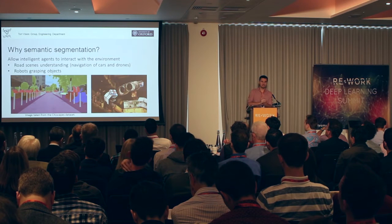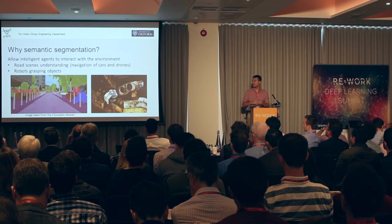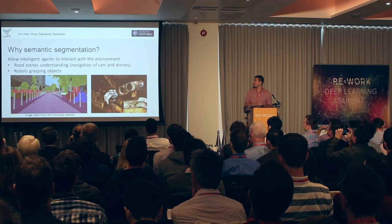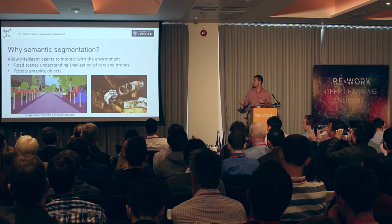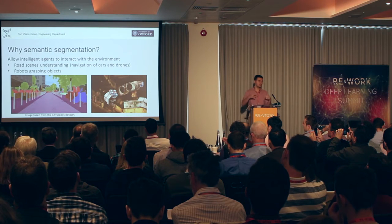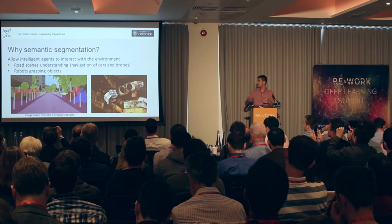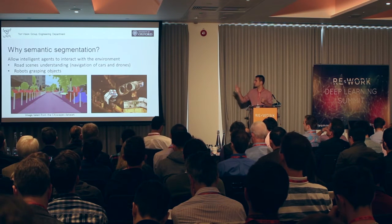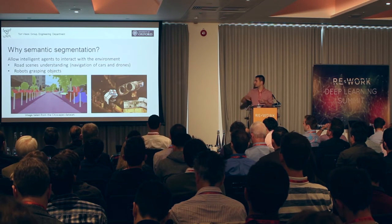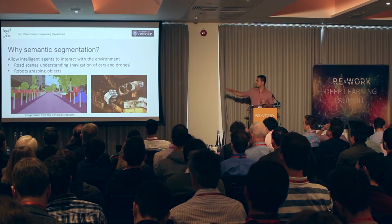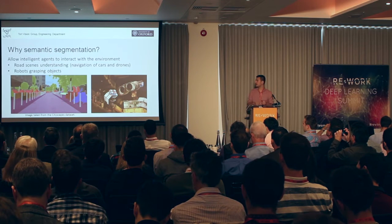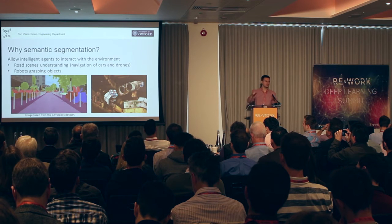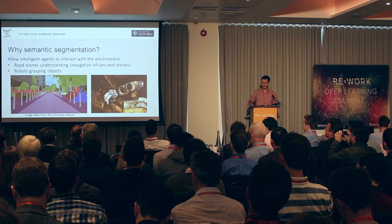Another application where segmentation is useful is to allow intelligent agents to interact with the environment. That is useful for any kind of agent, for example automatically driven cars and drones. It is useful to recognize the area of the road, where the trees are, where people are, and so on. And also for robots in general to interact with objects in the environment.